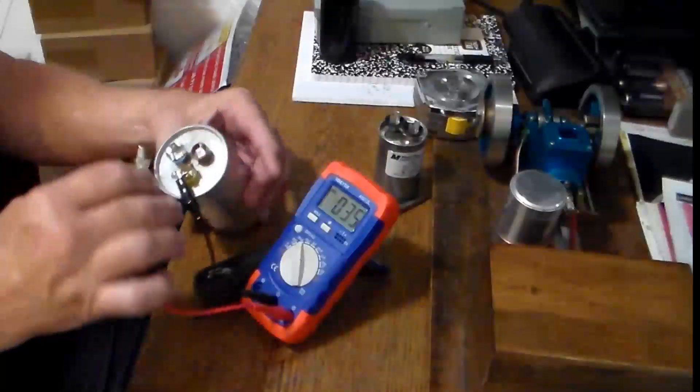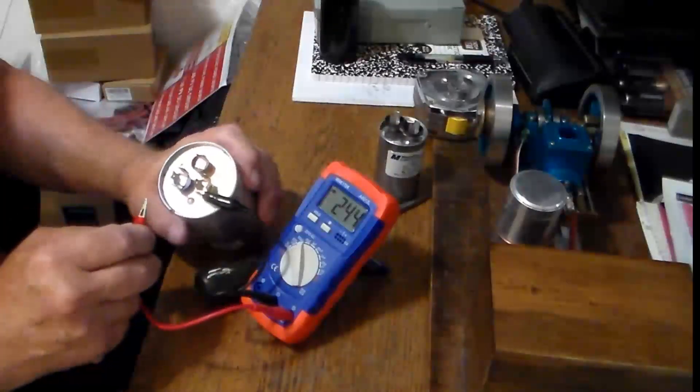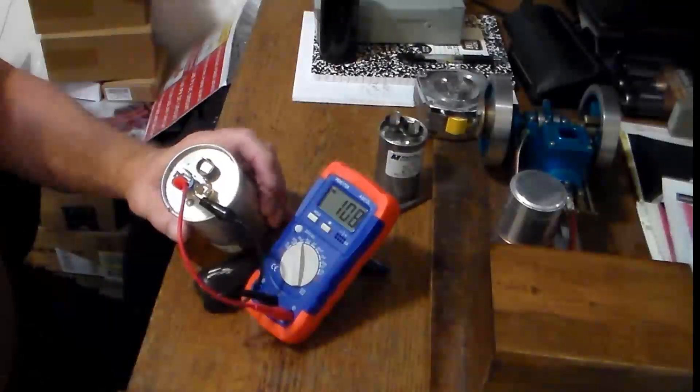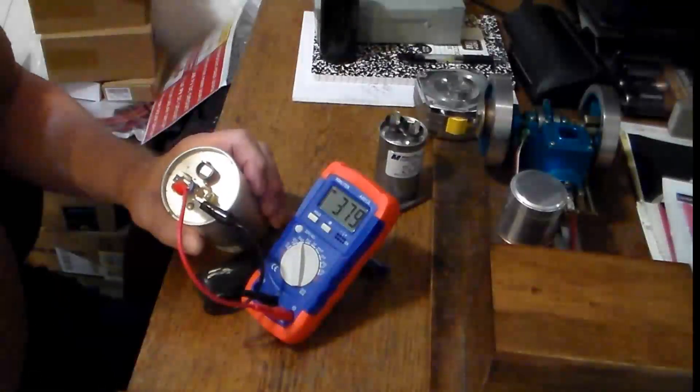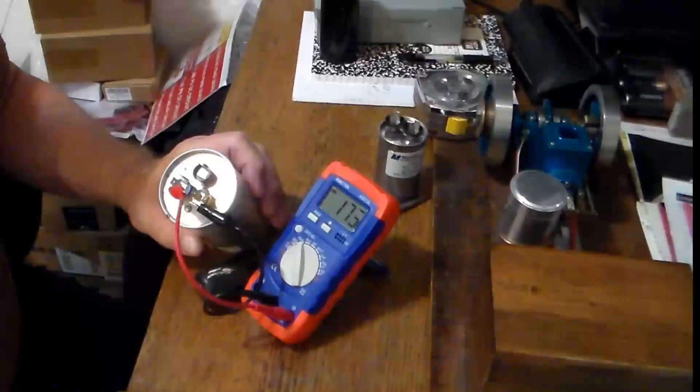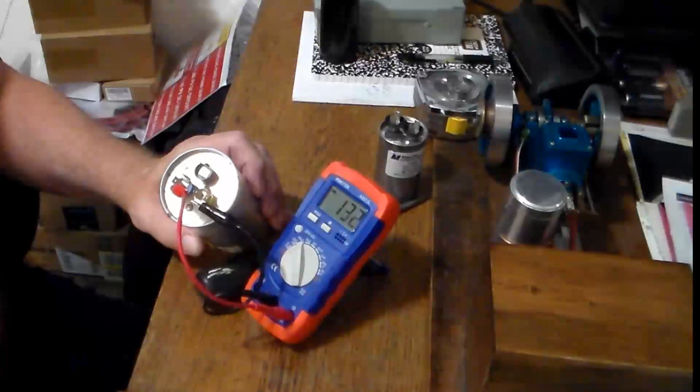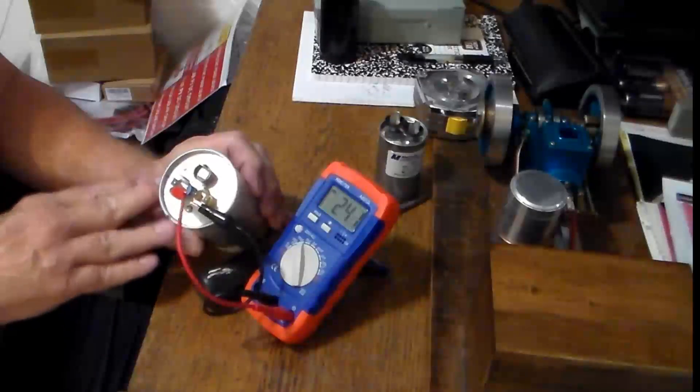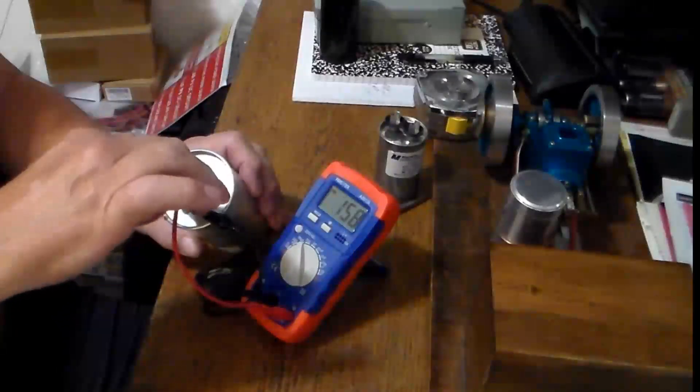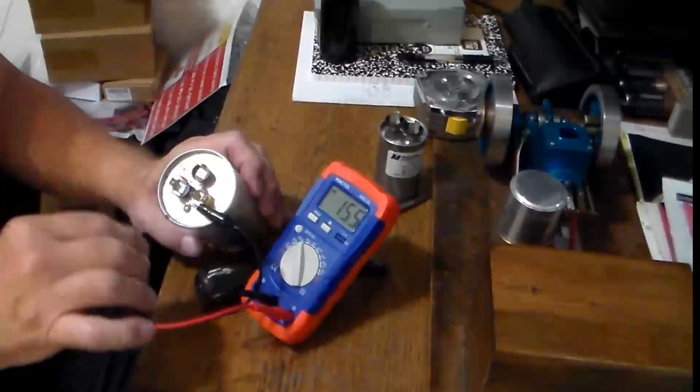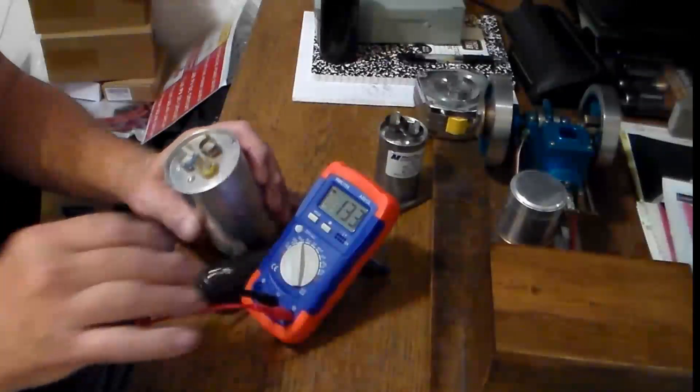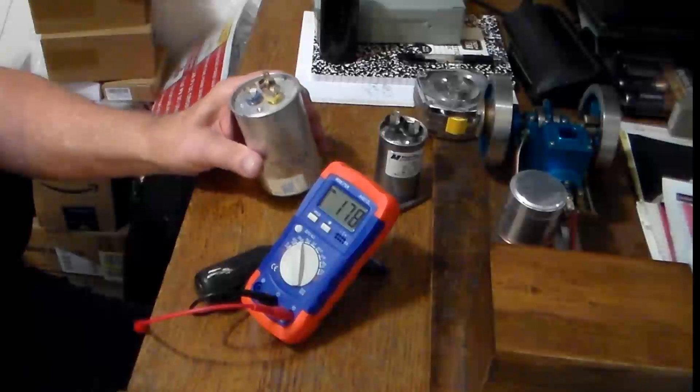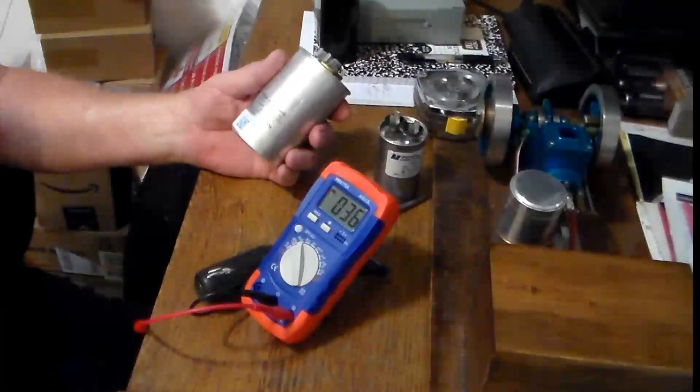So the compressor should be getting the 45 microfarads. And what is it getting? It's just going all over the scale. So we can say reasonably sure that this has failed. This capacitor has failed on the herm, or compressor side, and so you would just need to replace it.